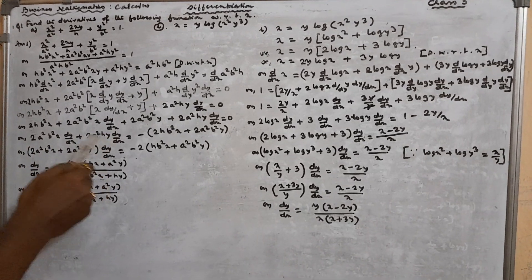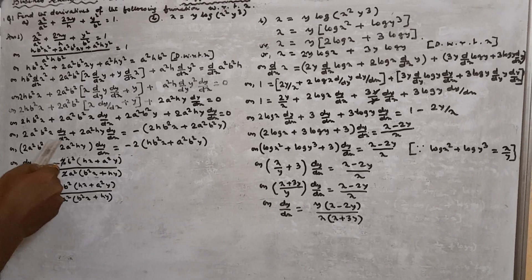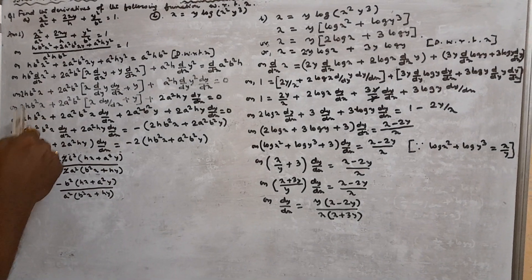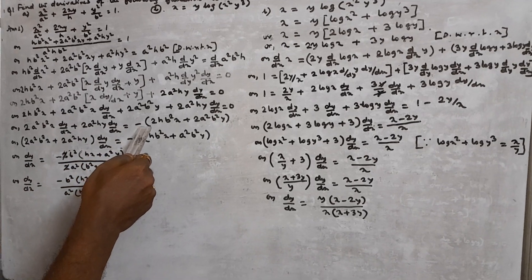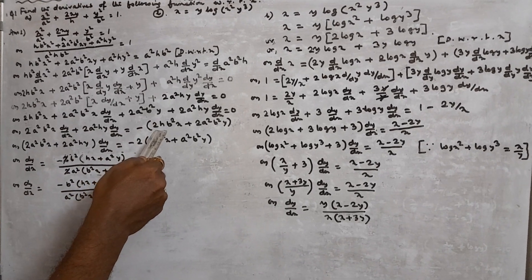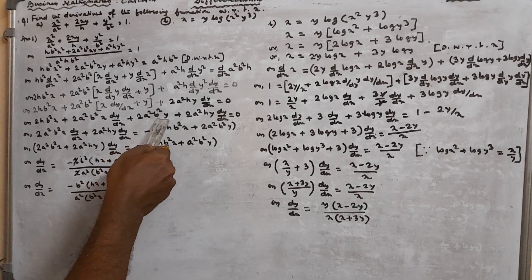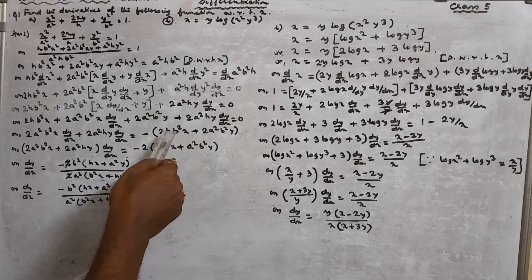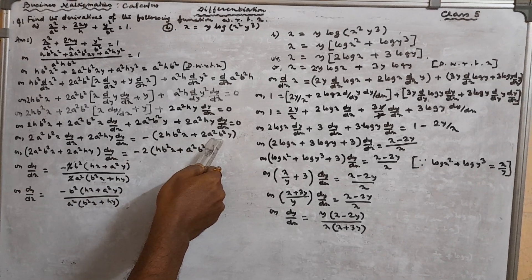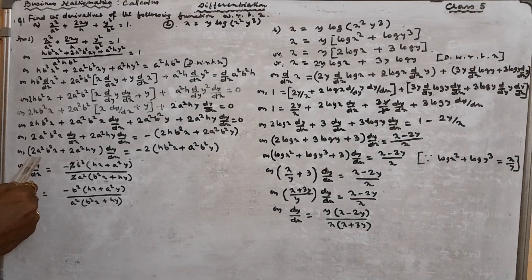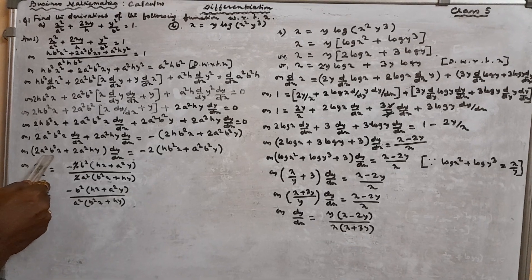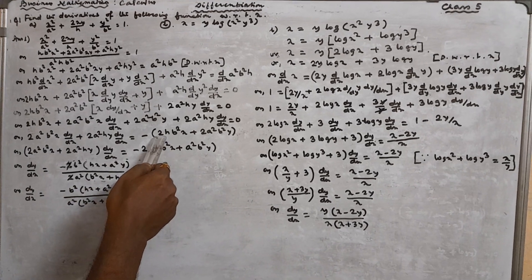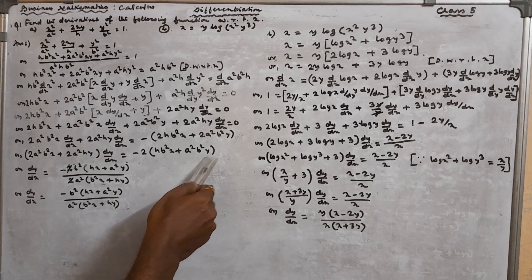Now taking dY/dX terms to one side: 2A²B²X · dY/dX + 2A²HY · dY/dX = −2HB²X − 2A²B²Y. Taking dY/dX common: dY/dX · (2A²B²X + 2A²HY) = −2(HB²X + A²B²Y). Taking minus common on the right side gives minus 2 with HB²X + A²B²Y in bracket.